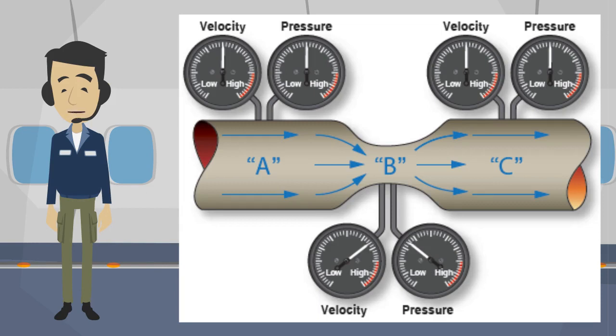The fluid has to speed up to get through the narrow area, so pressure is lowest at point B. Let's look at some parts that use this principle.